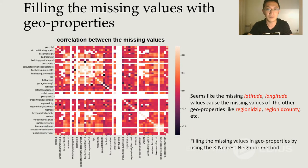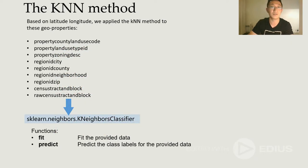From the correlation graph, we can see that the latitude and the longitude is the cause of the missing values of the other geo properties like region ID county or region ID city. And we are going to use the KNN method based on the latitude and the longitude to find the nearest neighbor for other geo properties. Here's the list of the main part of geo properties. For each of them, we are going to use the 10 nearest neighbor method based on the latitude and the longitude.